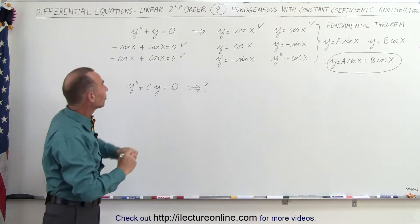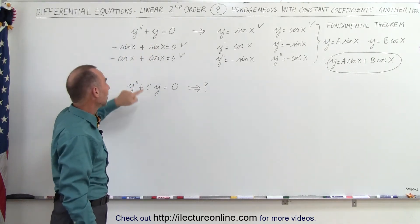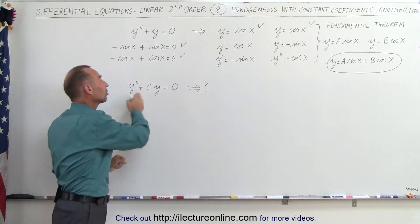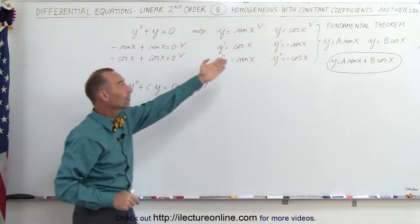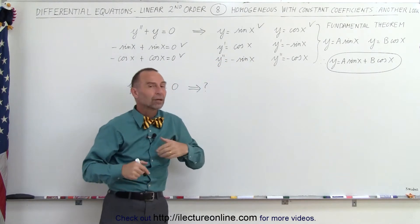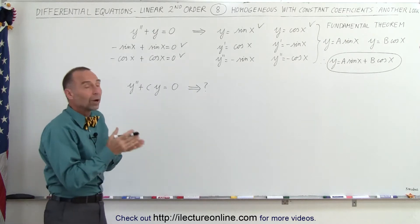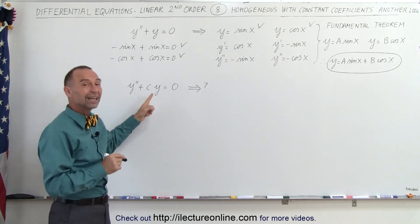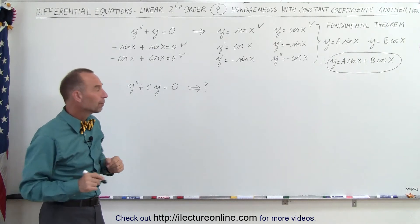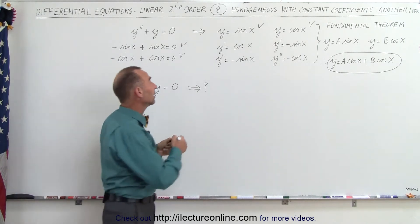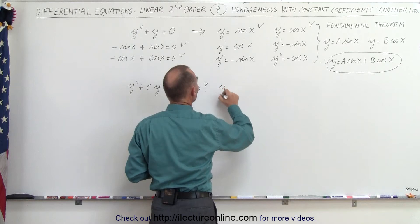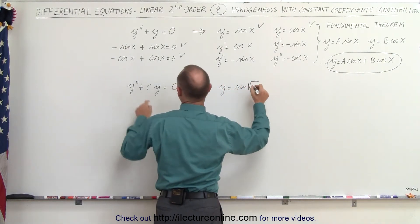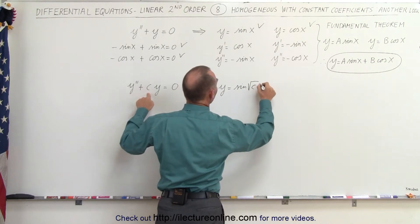Sometimes the y term does have a constant in it, and the question is how do we deal with that constant. This is very handy to know because there are all kinds of applications where the constant in front of y is other than 1. One possible solution is y equals sine of the square root of c times x. Let's verify that.